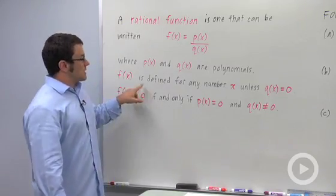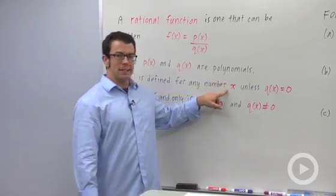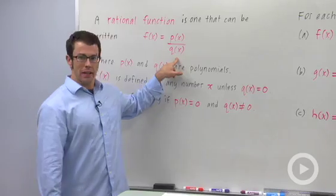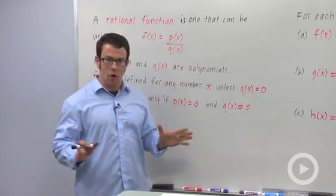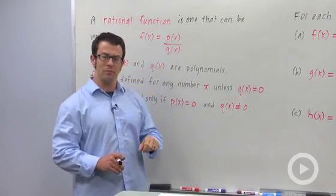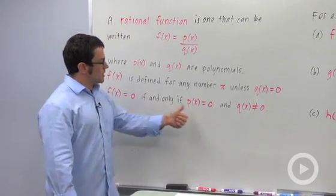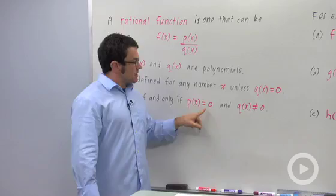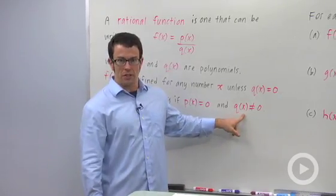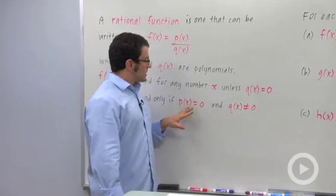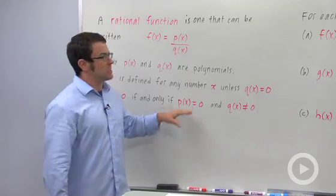Now, f of x is defined for any number x unless q of x, the denominator, equals 0. So the domain will be all real numbers except those that make the denominator 0. And the zeros of a rational function will be the zeros of the numerator, just as long as they are not also zeros of the denominator. So let's practice using these definitions in an example.